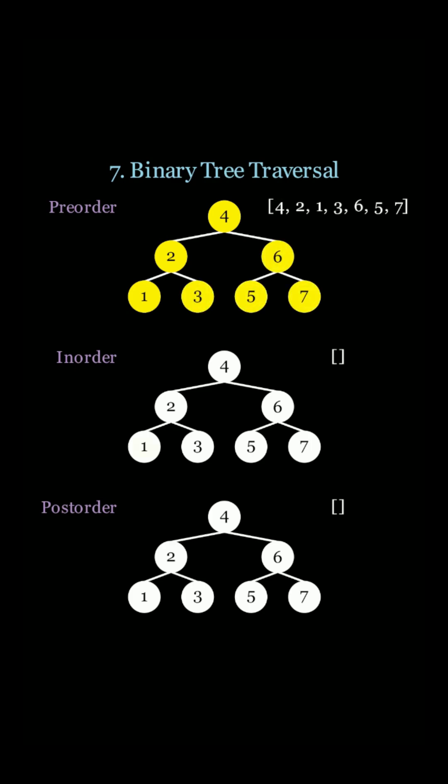For the in-order traversal, we're going to explore all the nodes to the left, then the current node, and then all the nodes to the right. That's going to look like 1, 2, 3, 4, 5, 6, and finally 7.